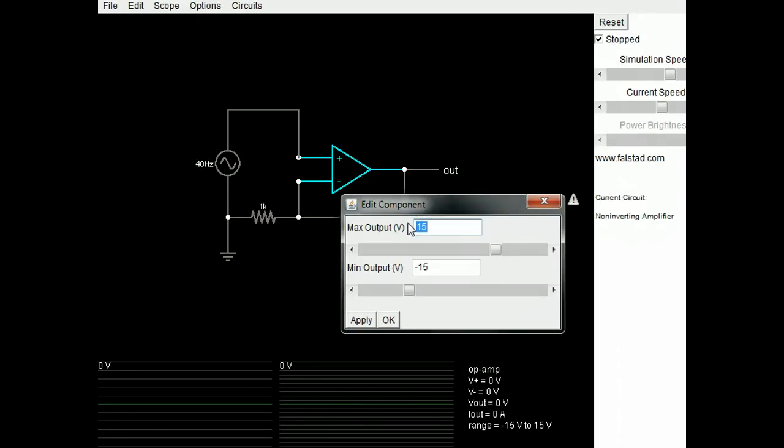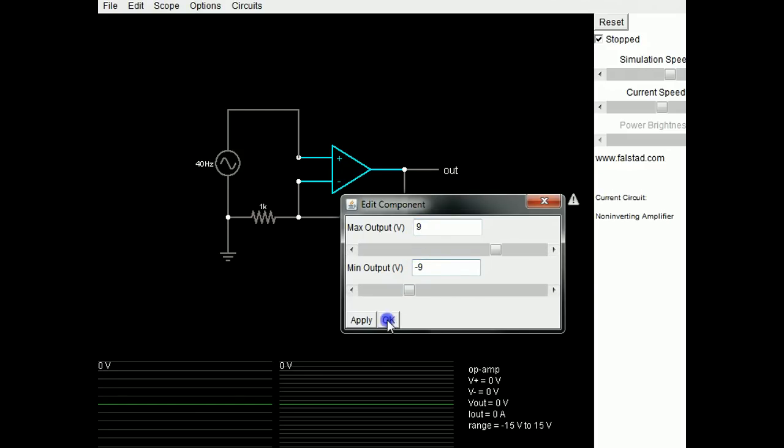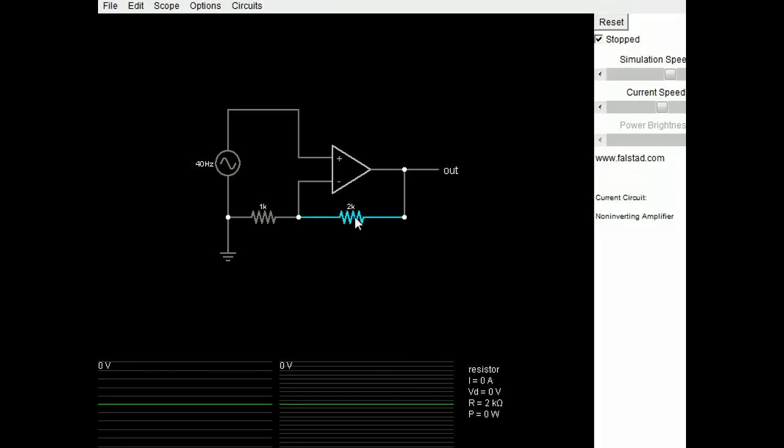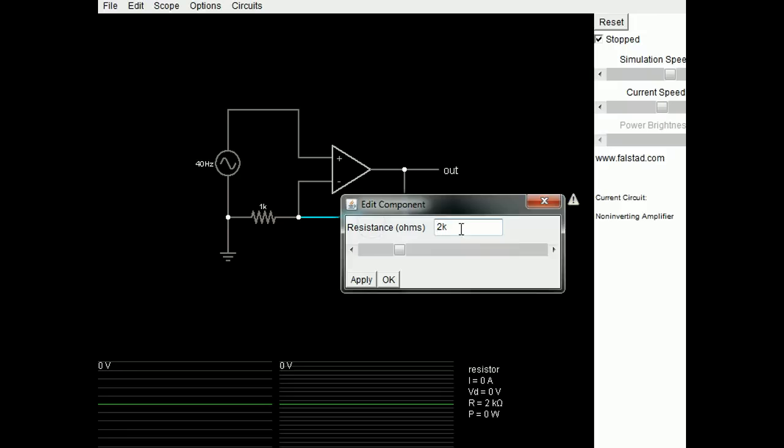For example, instead of 15, we wanted maybe 9 volts and minus 9 volts. That's fine. Instead of a 2k feedback resistor, I'll right-click on that. We can make this maybe 50k.